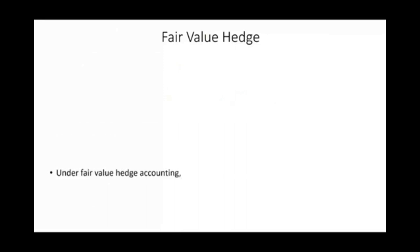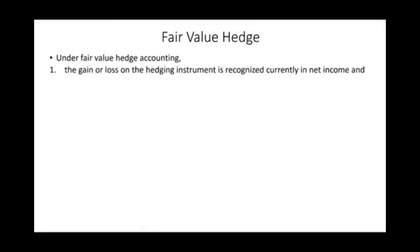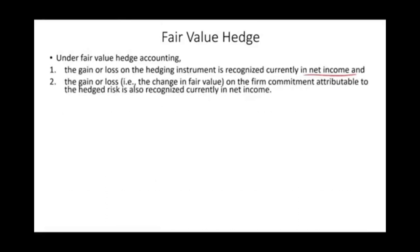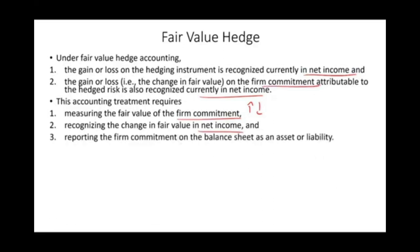For illustration, we're going to use the fair value hedge. Under the fair value hedge, the gain or loss on the hedging instrument is recognized in net income, and the gain or loss on the change in the fair value of the firm commitment is also recognized in net income — so everything goes into net income. This accounting treatment requires that you measure the fair value of the firm commitment and report it on the balance sheet as an asset or a liability, depending on what happened to the currency.